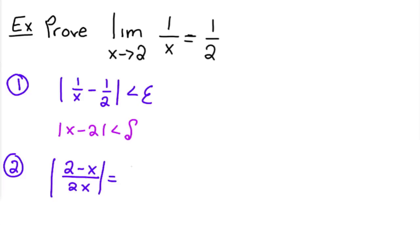because it's absolute value, this is equal to x minus 2 over 2x. And what I'm going to do is I'm going to leave the 2 outside of here and just put the x in the absolute value.